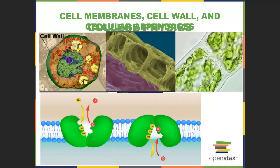Hello, everybody. Provy here. We're going to continue on with our discussion of cells, paying specific attention in today's lecture to reviewing the cell walls of both prokaryotic and eukaryotic cells, then looking at the plasma membrane of prokaryotic cells, and spending a significant amount of time talking about the plasma membrane of eukaryotic cells. Let's get started.